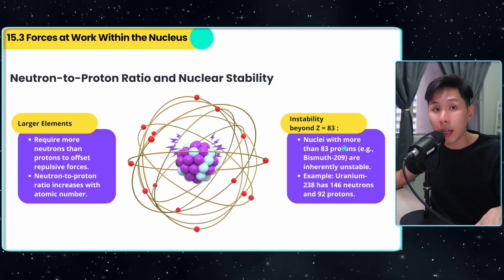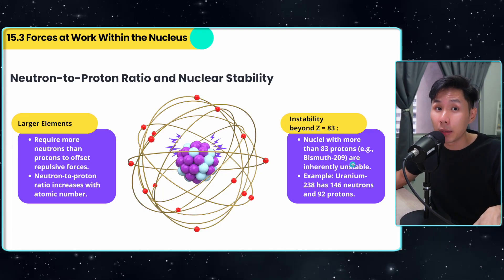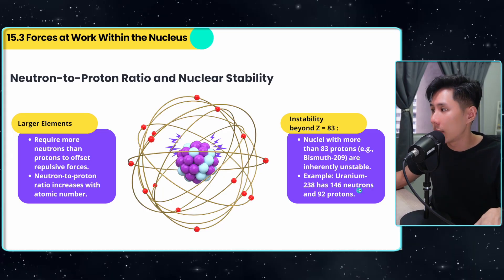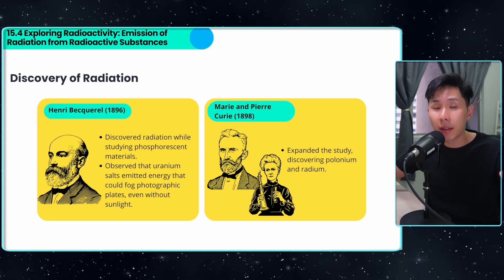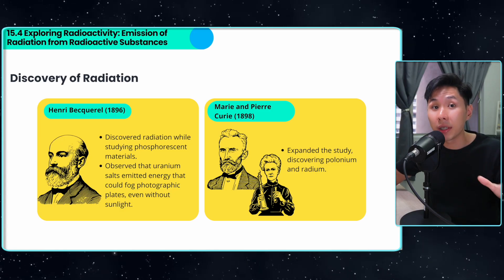However, scientists found out that nuclei with more than 83 protons are inherently unstable, no matter how many neutrons you have, for example, uranium-238. Understanding the stability of an atom helped us understand how radiation occurs.